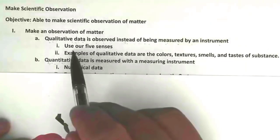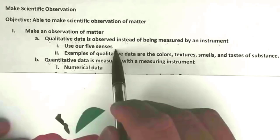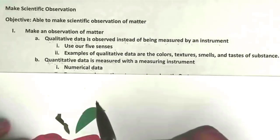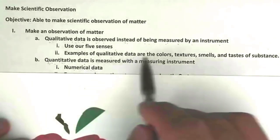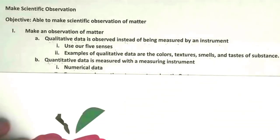And we can use our five senses to collect qualitative data. Examples of qualitative data are colors, textures, smells, and the taste of substance.